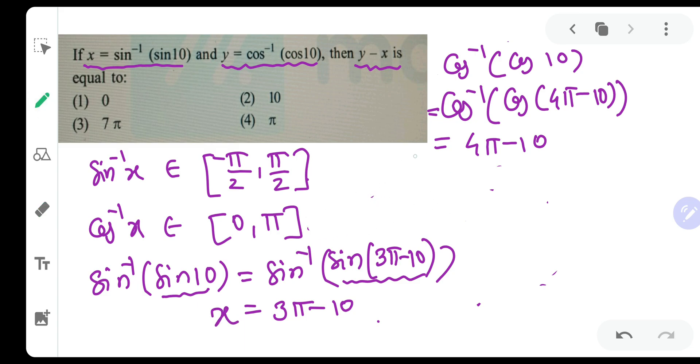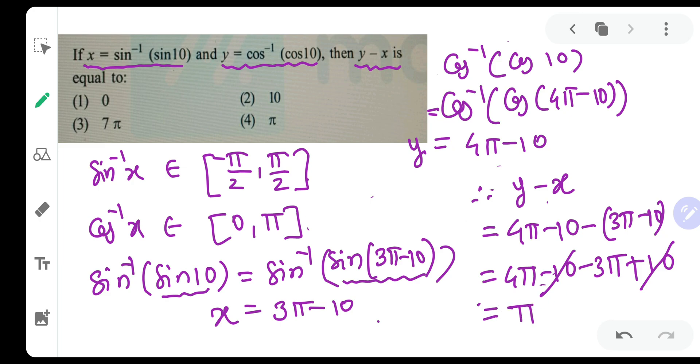So this was x and this is y. Therefore, they have asked us y minus x. What is y? 4 pi minus 10. And what is x? 3 pi minus 10. So this will be equal to 4 pi minus 10 minus 3 pi plus 10. Minus 10 and plus 10 gets cancelled. So 4 pi minus 3 pi is pi. Therefore, the correct option to this question is option number 4 which is pi.